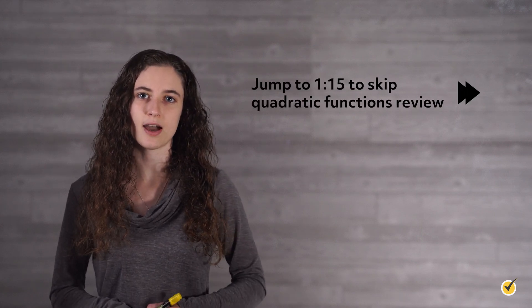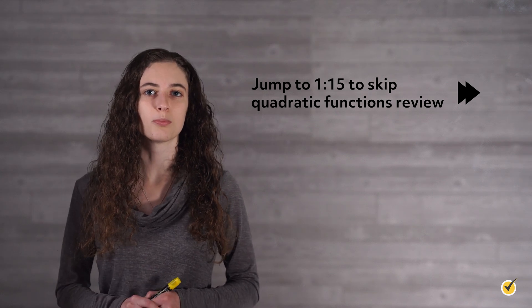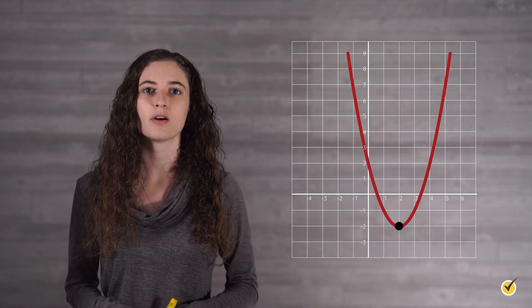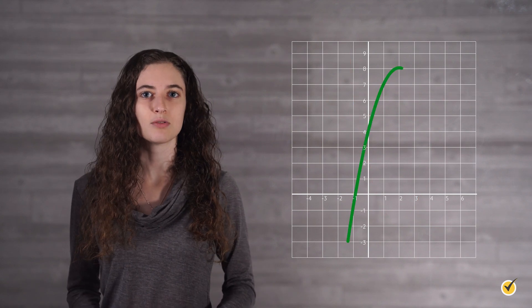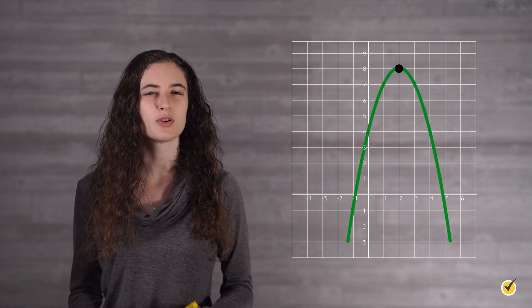The process of completing the square allows us to identify the vertex of a quadratic, which is either the maximum or minimum value of the function. Graphs of quadratic functions are called parabolas. If the parabola opens up, the vertex is the minimum point of the function and can be visualized as the bottom of a valley. If the function opens down, the vertex is the maximum point, as if it were on the top of a hill. There are many applications that require knowledge of where a function is at its maximum or minimum value, so being able to identify this point quickly is an important skill.